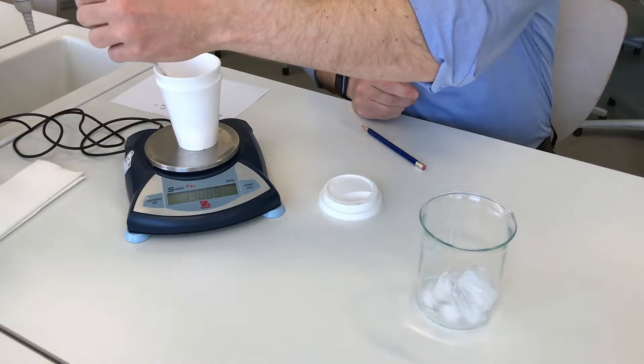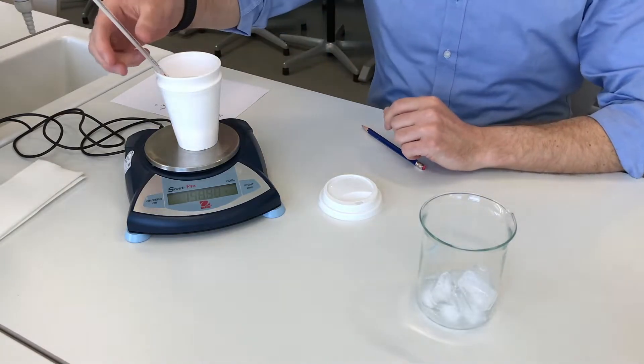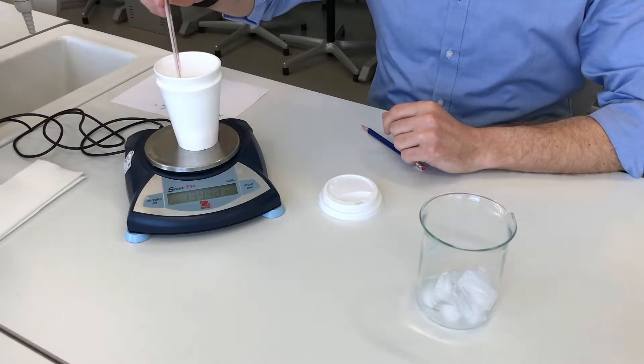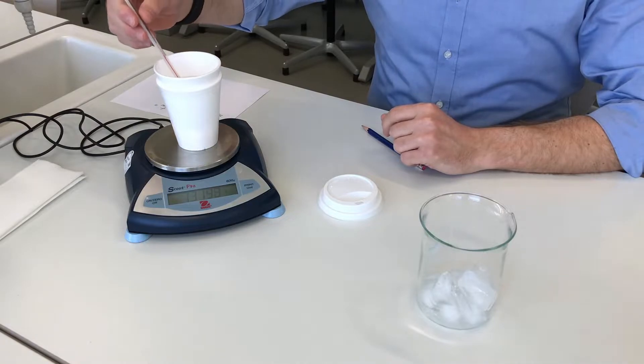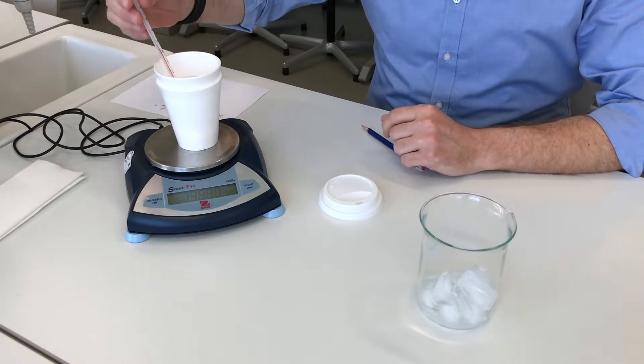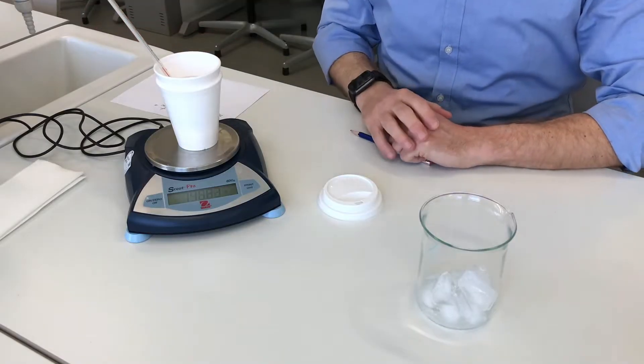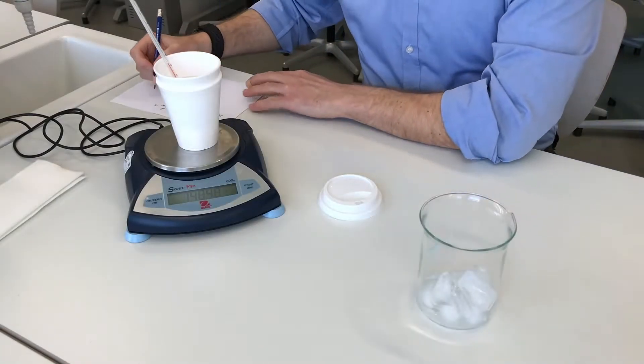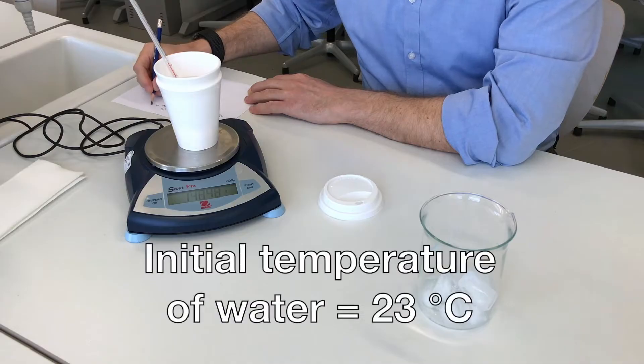The other quantity that I need is the temperature of water. I need to wait a little bit until the thermal equilibrium is being established between the thermometer and the water. So the temperature of the water is 23 degrees.